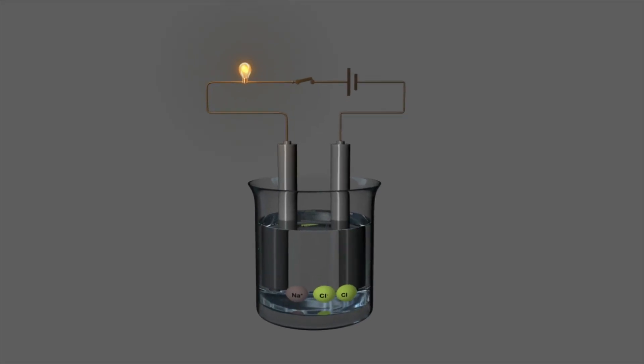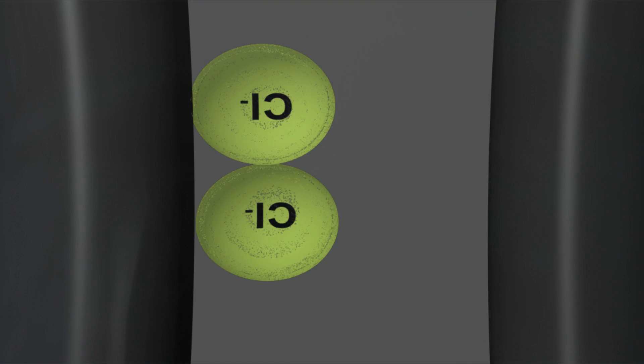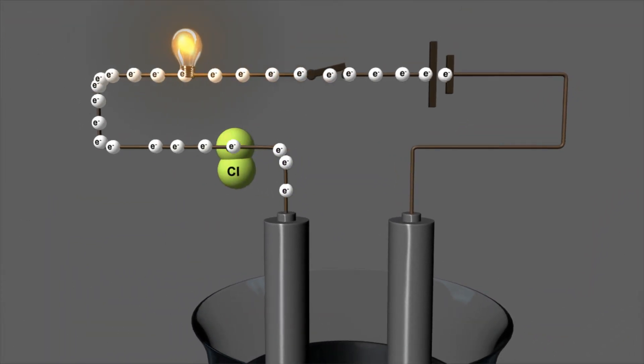Kolbe electrolysis is the magic of chemistry. Ethane's formation from carboxylate ions, it's truly a delight. The structure alchemy has come.